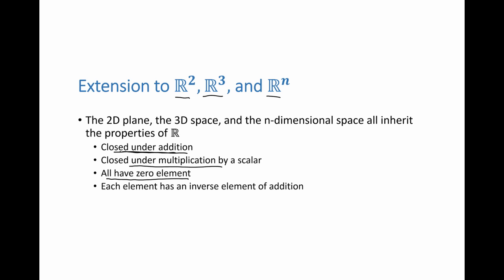Each of these have the zero element, so there is a zero vector in R2, there is a zero vector in R3, there is a zero vector in Rn, and each element of these spaces has an inverse element of addition. For example, if I say that x is a vector in R2 and x is equal to the vector 5, 3, then I have negative x, which is the inverse element. It's the vector of negative 5, negative 3, and if I add x plus negative x, I'm going to get the zero vector.